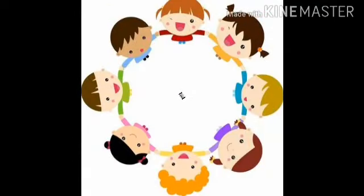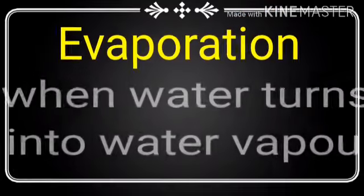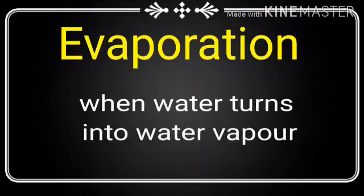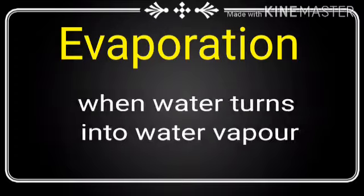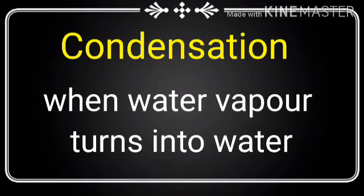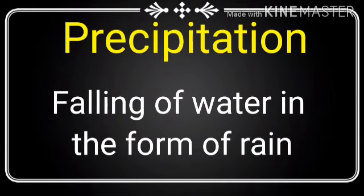You can easily tell how rain forms. Now it is recap time. The first step in the water cycle is evaporation — when water turns into water vapor. The second step is condensation — when water vapor turns into water. And the third step is precipitation — falling of water in the form of rain.